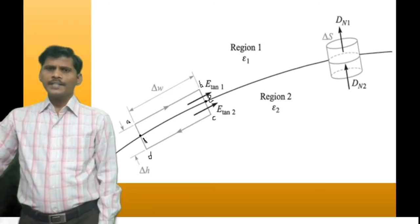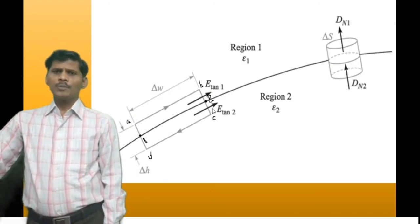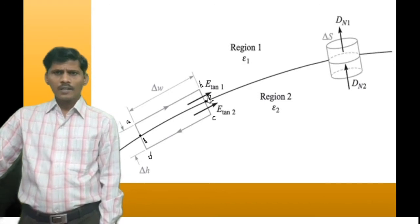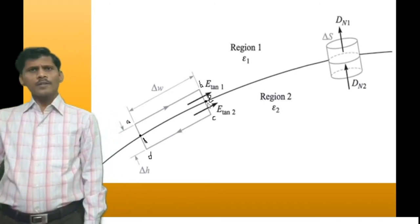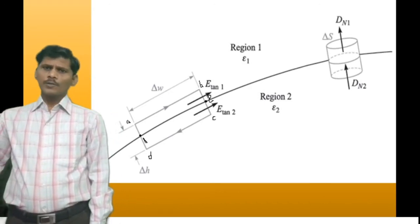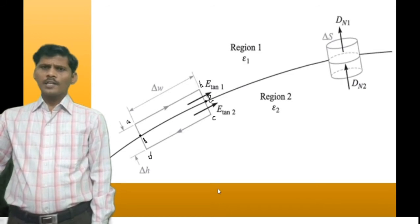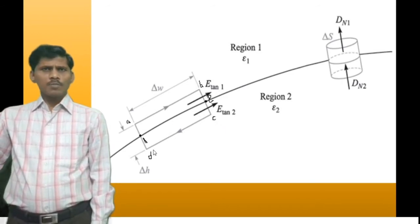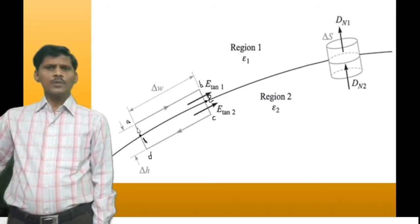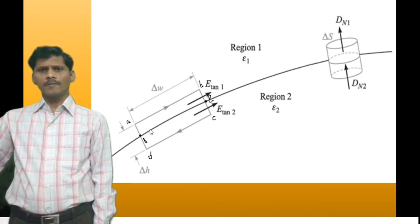The six parts are: integral A to B of E-bar dot dL-bar, plus integral B to 2 of E-bar dot dL-bar, plus integral 2 to C of E-bar dot dL-bar, plus integral C to D of E-bar dot dL-bar, plus integral D to 1 of E-bar dot dL-bar, plus integral 1 to A of E-bar dot dL-bar, all equal to 0.